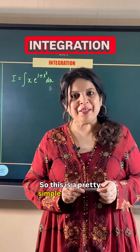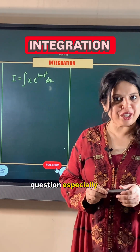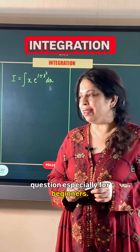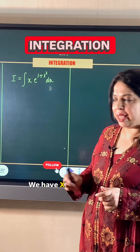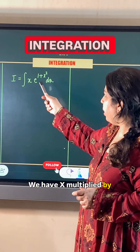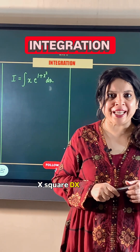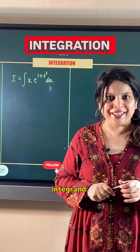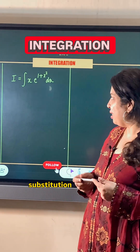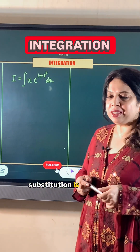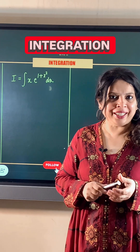This is a pretty simple integration question, especially for beginners. We have x multiplied by e to the power 1 plus x squared dx as the integrand. Substitution is the most common method in integration.